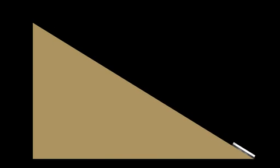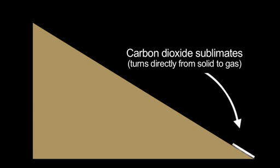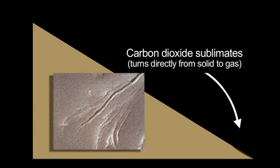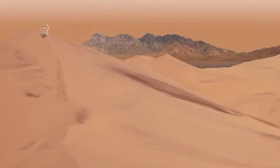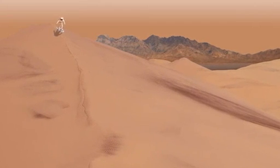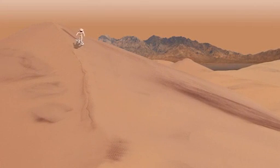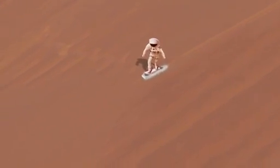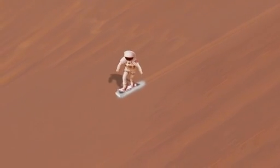Then when it got to the bottom, instead of just sitting there, it would disappear as the area heated up, and that could possibly leave a pit. I'm looking forward to the day when astronauts can engage in a whole new area of extreme sports. They could snowboard down these carbon dioxide covered dunes on a cushion of carbon dioxide — they would just shoot right down those slopes. It would be amazing.